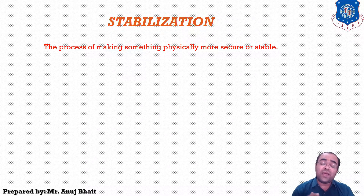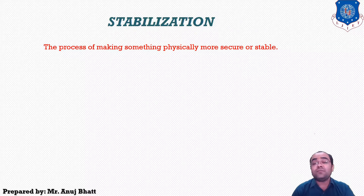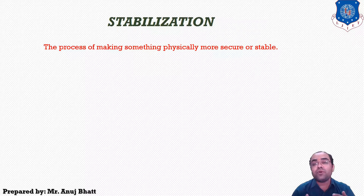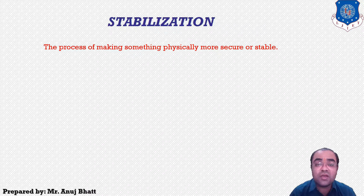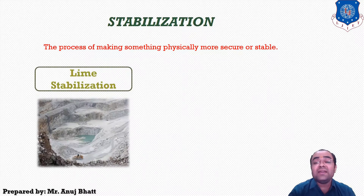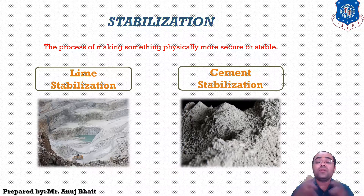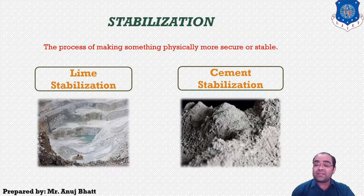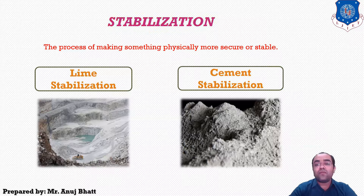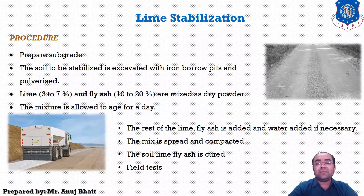To improve or enhance the inner property of the soil mass, we add some additives — we add some material into the soil. Specifically for road construction, we use lime and cement for stabilization. Thus we have two types: lime stabilization and cement stabilization, using these two materials as additives in the soil mass.